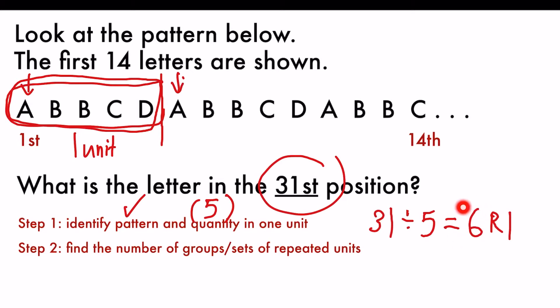So what does 6 refer to? 6 here refers to 6 units of A, B, B, C, D. A, B, B, C, D. And this is two units and then there are a total of six of them that repeats itself in a uniform manner.